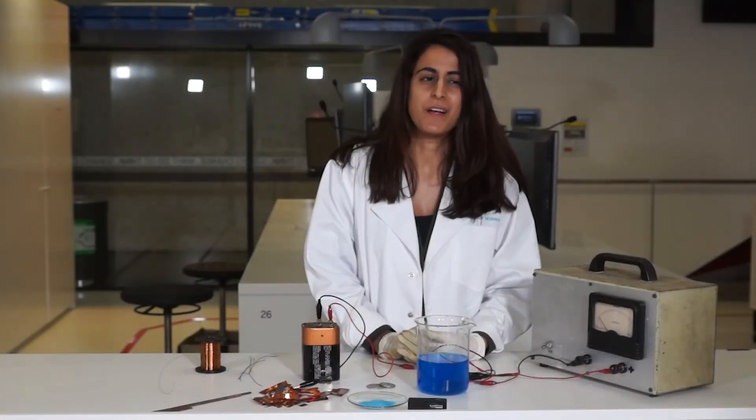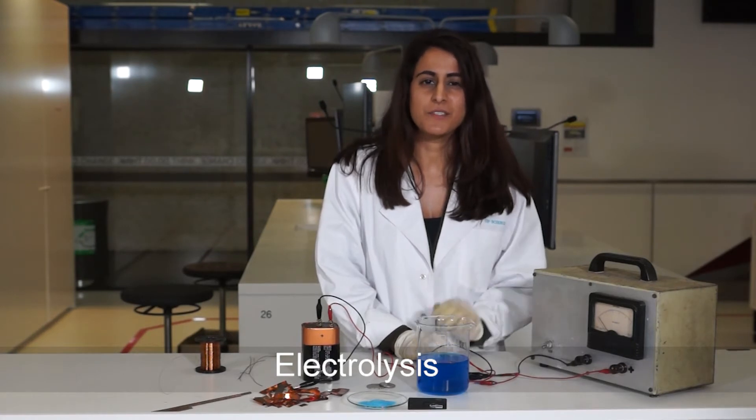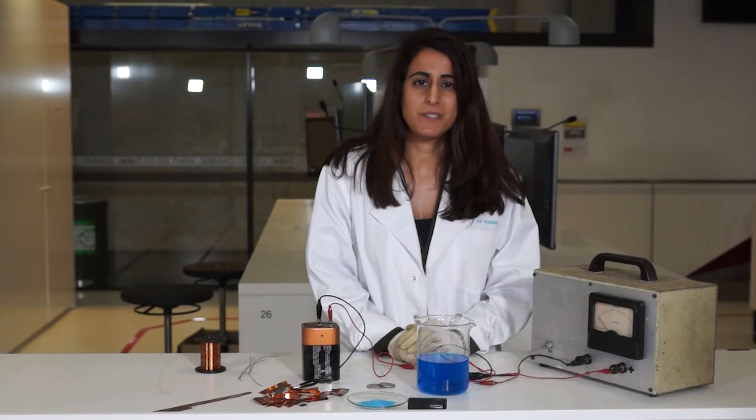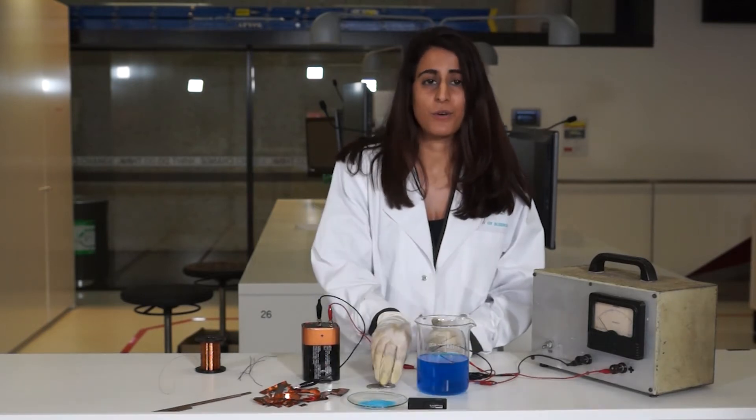Now how do we get purified copper? The most common method involves a process called electrolysis. Electrolysis describes a powerful reaction that's driven by electrical power. Now we're going to demonstrate the electrolysis by copper electroplating, or copper plating.